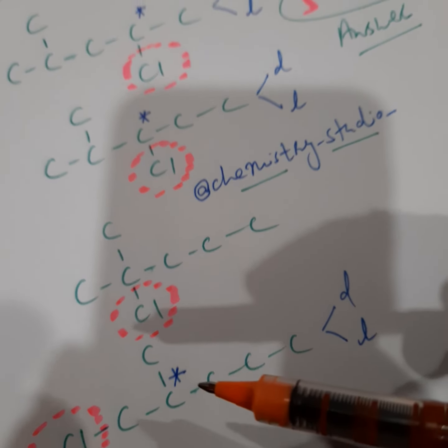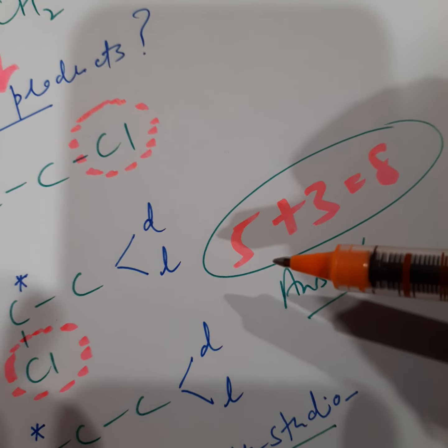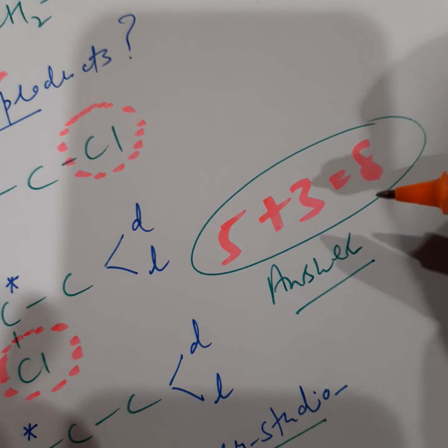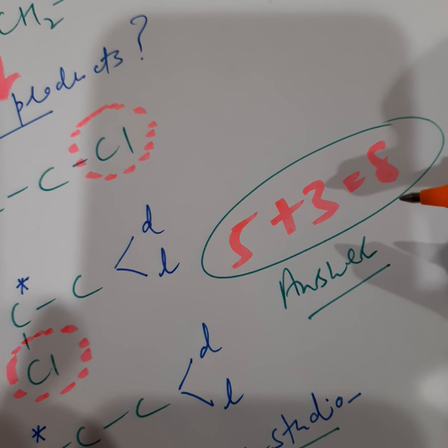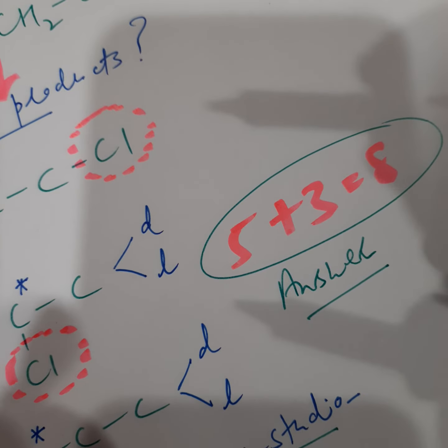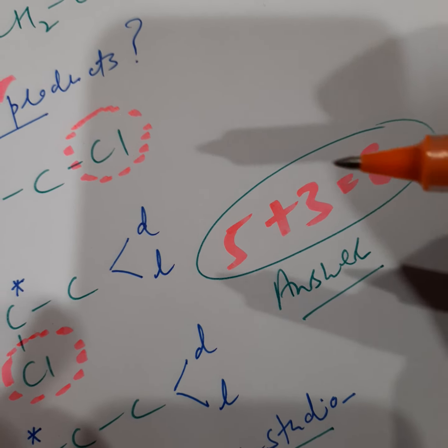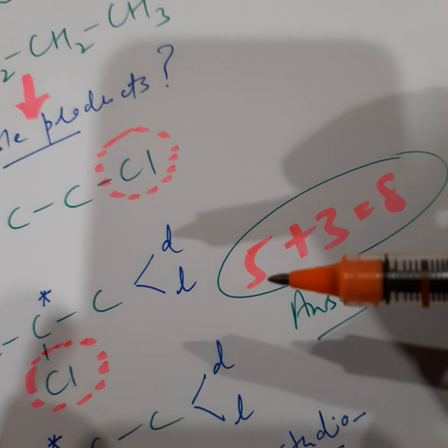So three more products are formed. So the final answer becomes 5 plus 3 is equal to 8. So if we are asked to tell how many products are formed with considering stereoisomerism the answer is 8 and without stereoisomerism the answer is 5.